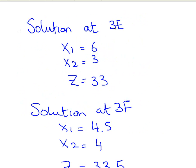So the solution at 3E, we would have got x1 is equal to 6, x2 is equal to 3 and the realization of the objective function would have been 33. Integer solution and realize the maximized value.